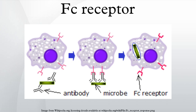Another FCR is expressed on multiple cell types and is similar in structure to MHC class I. This receptor also binds IgG and is involved in preservation of this antibody. Since this FCR is also involved in transferring IgG from a mother either via the placenta to her fetus or in milk to her suckling infant, it is called the neonatal FC receptor.